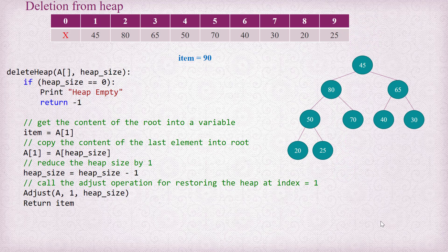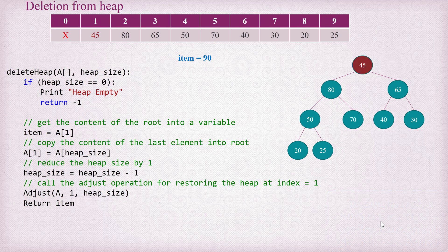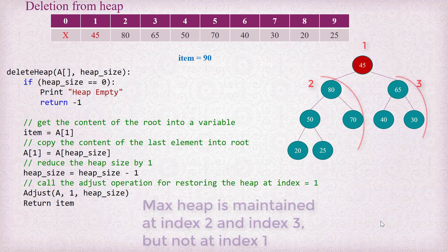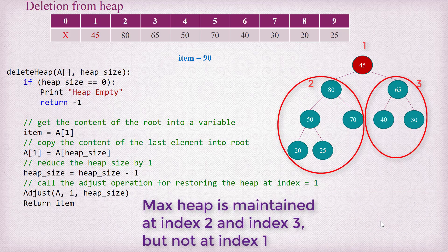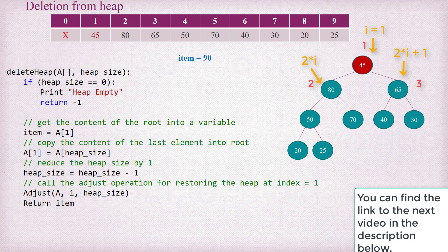Now, after copying the last element into the root of the heap, the heap may no longer be a valid heap at index 1. We can see that the max heap is definitely maintained at index 2 and also at index 3, but it may not be maintained at index 1. To be general, a max heap is not maintained at index i equals 1; however, the max heap is well maintained at 2i and 2i+1 — that is, both children of index i are indeed a valid max heap.